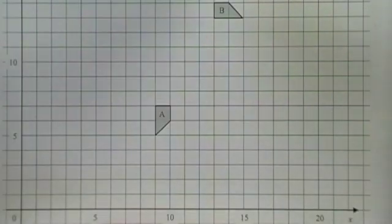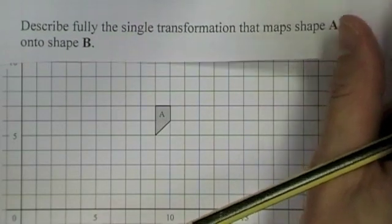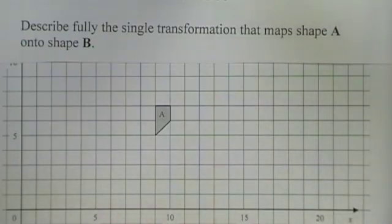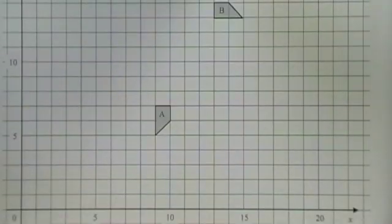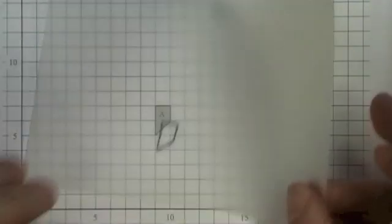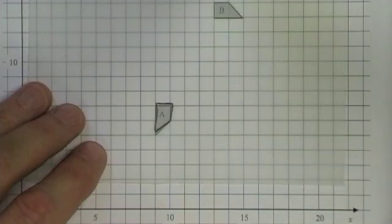This one's a much harder one. Again, the question states describe fully the single transformation which maps shape A onto shape B. It's much harder because if you trace shape A, if you rotate it,